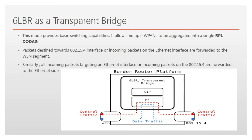As a transparent bridge, it acts and behaves like a basic switch. All incoming packets that are destined towards the Ethernet side but are received on the 802.15.4 interface are forwarded to the Ethernet side. Similarly, packets destined towards the Wireless Personal Area Network side but received on the Ethernet interface are forwarded to the RPL side.